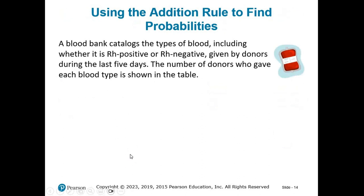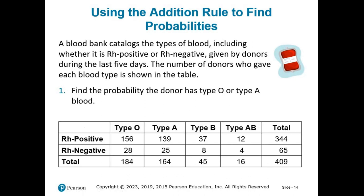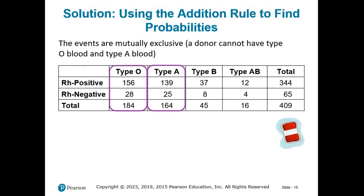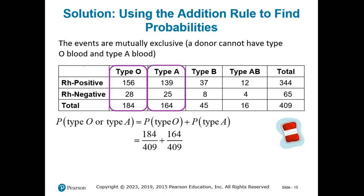A blood bank catalogs blood types given by donors during the last five days. A donor is selected at random. Find the probability the donor has type A or type O blood. You cannot simultaneously have type O and type A blood, so these are mutually exclusive events. There are 184 type O donors out of 409 total, and 164 type A donors out of 409. Adding 184/409 + 164/409 = 348/409, or about 0.851.